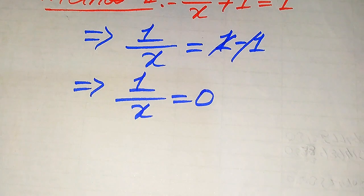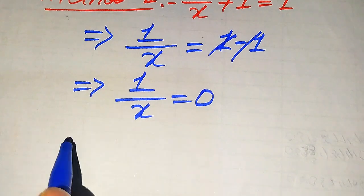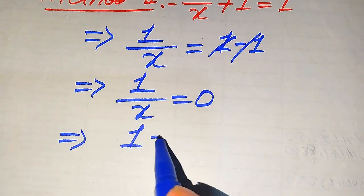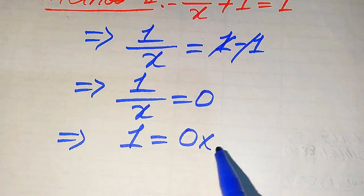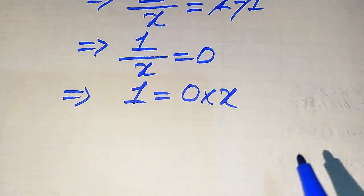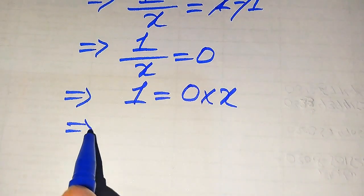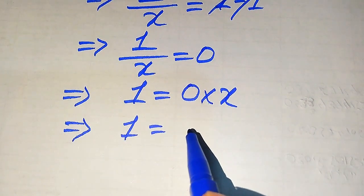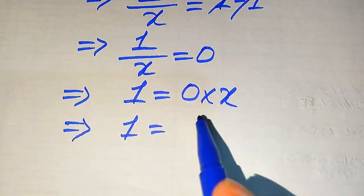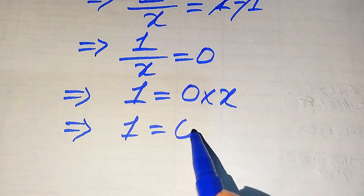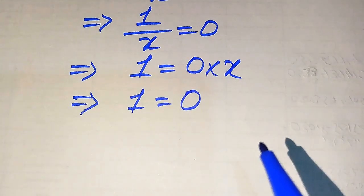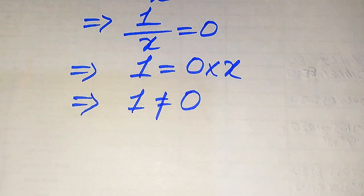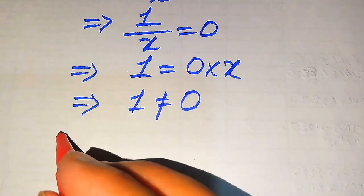In the next step, we move x to the right hand side, and it becomes 1 equals 0 multiplied by x. Since multiplying 0 with any number always equals 0, 0 times x becomes 0. So this also shows that 1 is not equal to 0, which is again not a possible case.